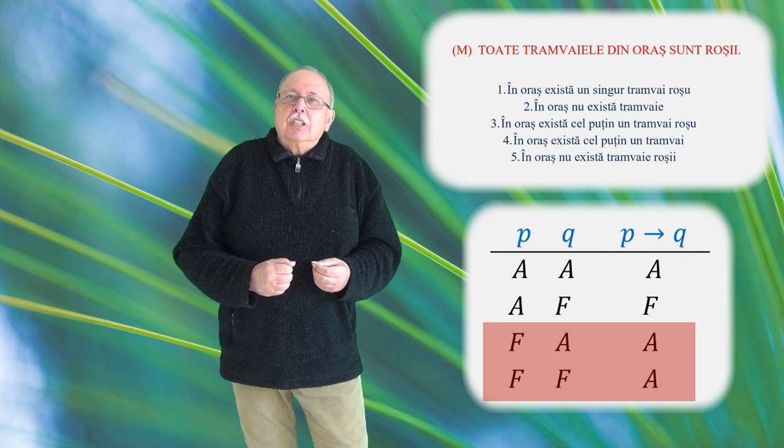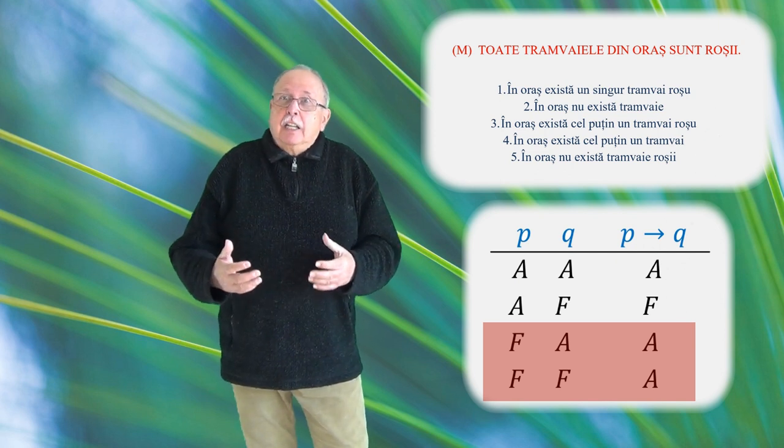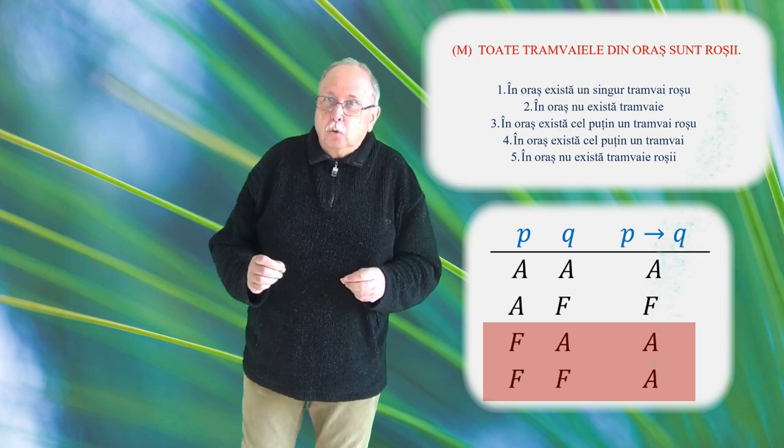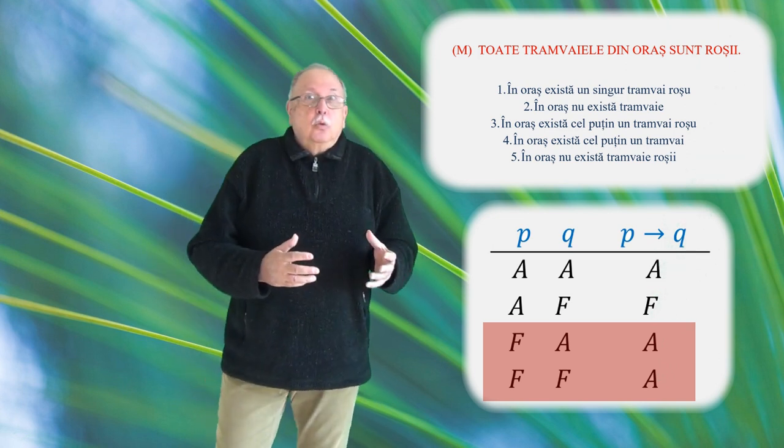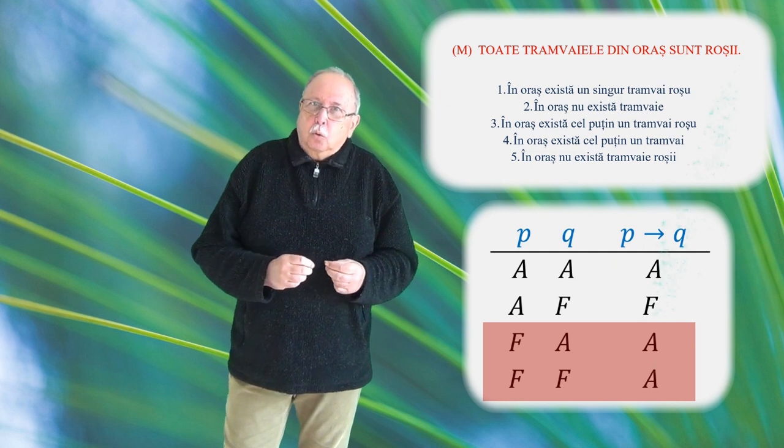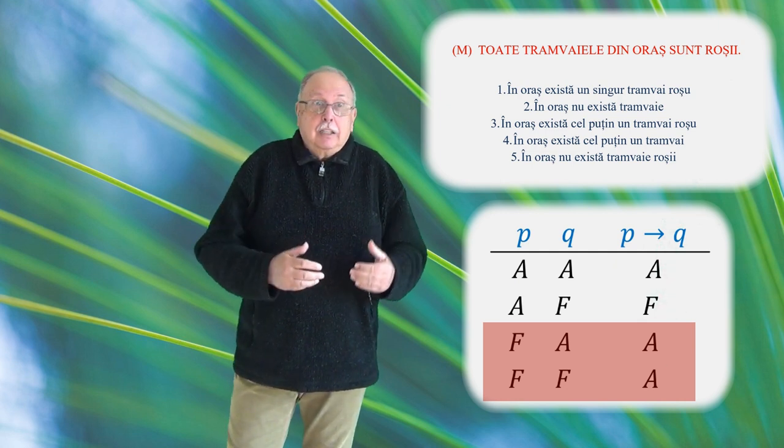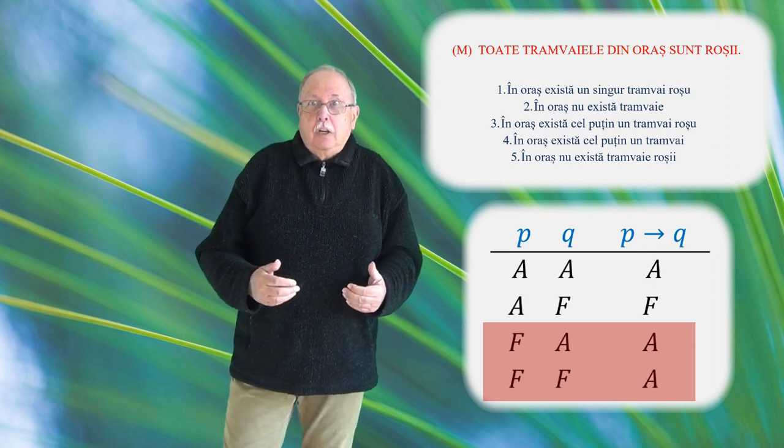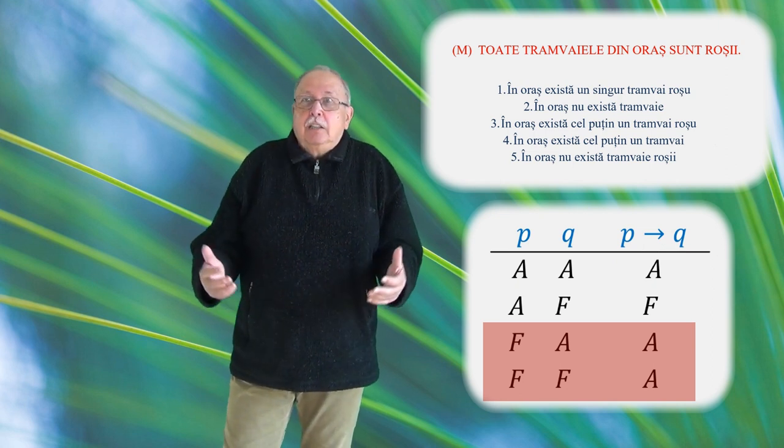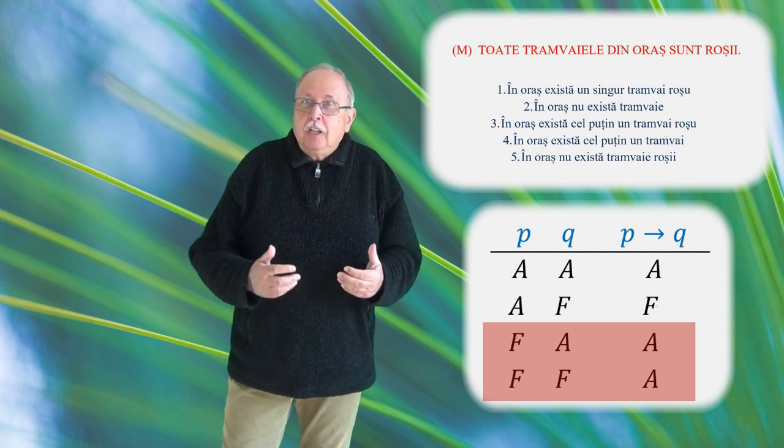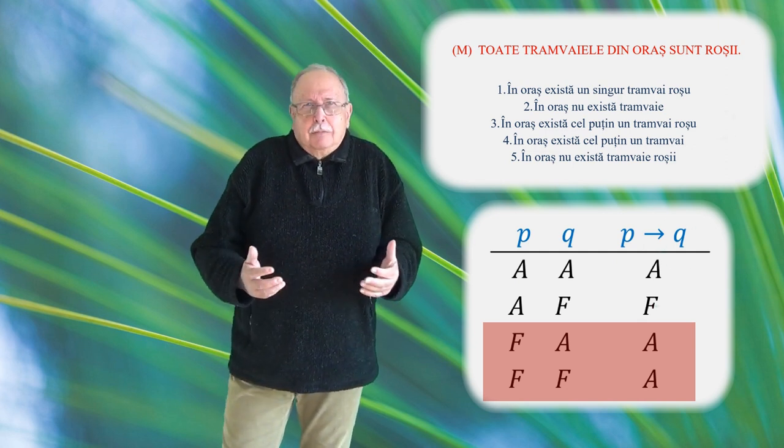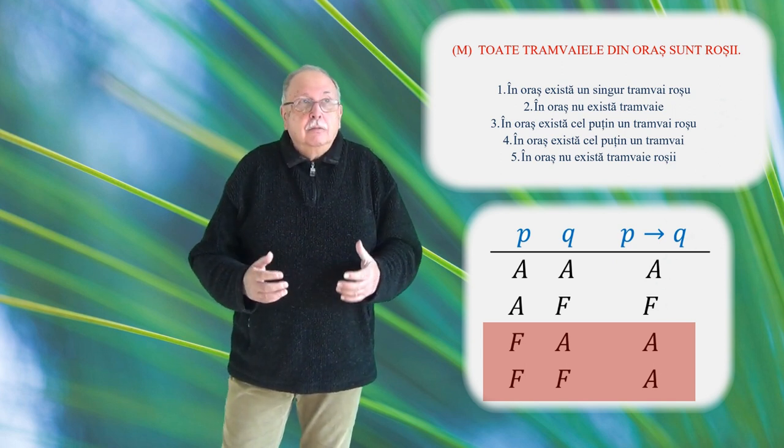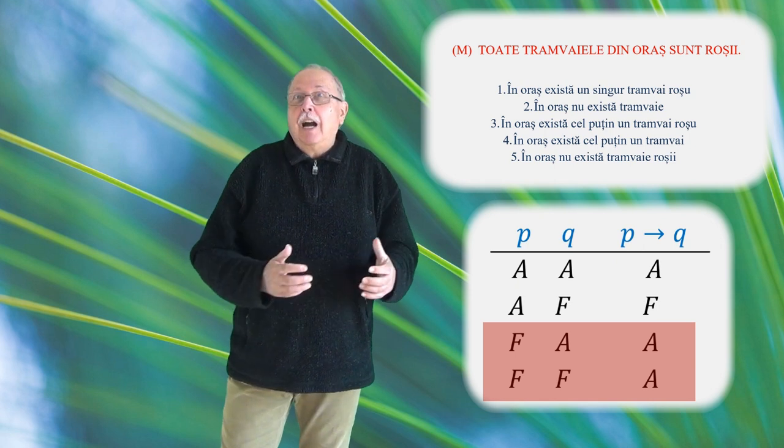La fel, dacă ești întrebat toate tramvaiele din orașul tău sunt roșii și n-ai voie să răspunzi decât cu da sau nu, iar în orașul tău nu există tramvaie, nu poți răspunde cu nu. Deoarece asta ar însemna că există tramvaie de alte culori decât roșu. Răspunsul corect este da. Toate cele zero tramvaie din oraș sunt roșii. N-are niciun sens, dar nu este o minciună. Și în logică, dacă nu e minciună, e adevăr.